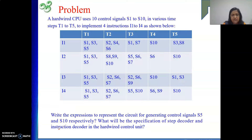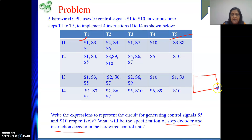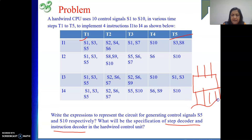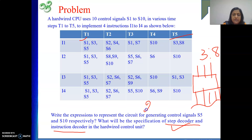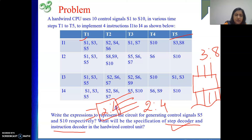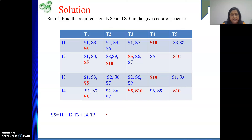Next, they ask for the size of the step decoder and instruction decoder. We need to see how many steps we are generating — T1 to T5, that is five steps. To generate five different outputs, two input lines give only four outputs, so we need three input lines giving eight outputs; five will be used and three remain as don't cares. So the step decoder is 3-to-8. For the instruction decoder, there are exactly four instructions, so two input lines produce four outputs: the instruction decoder is 2-to-4.